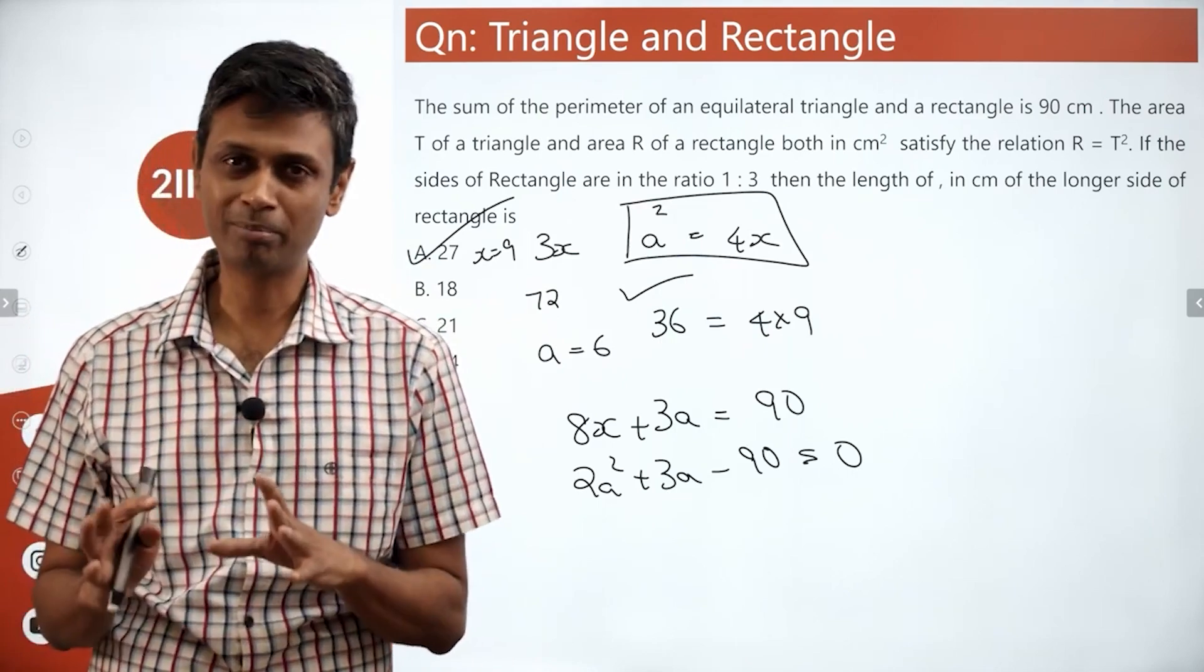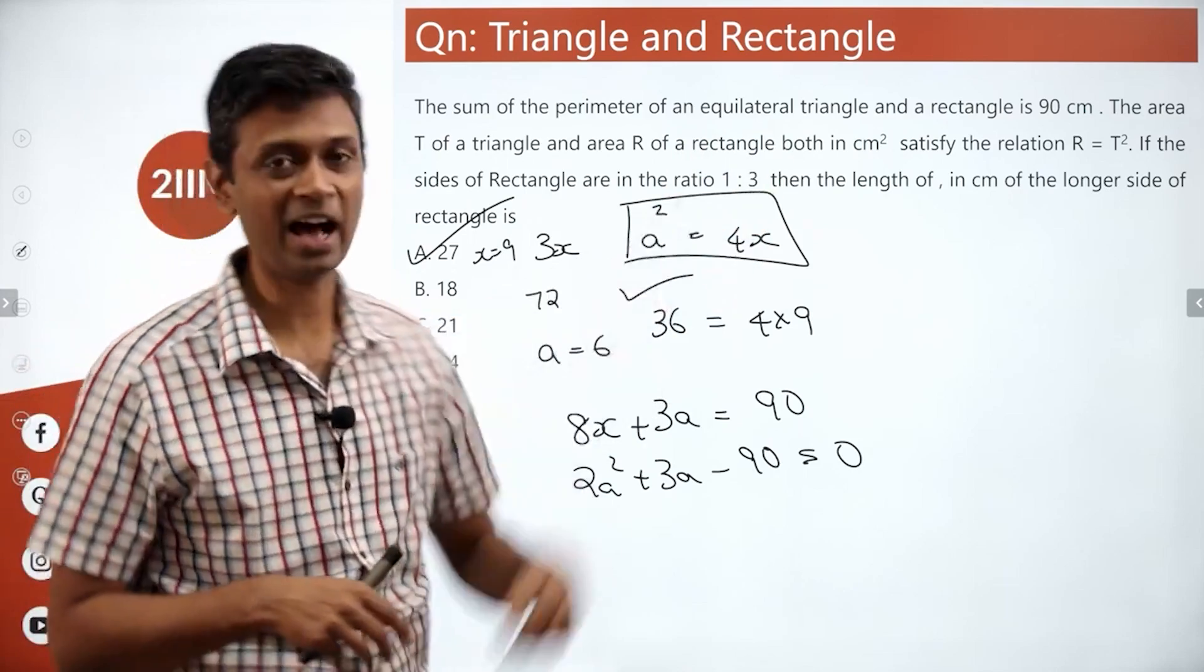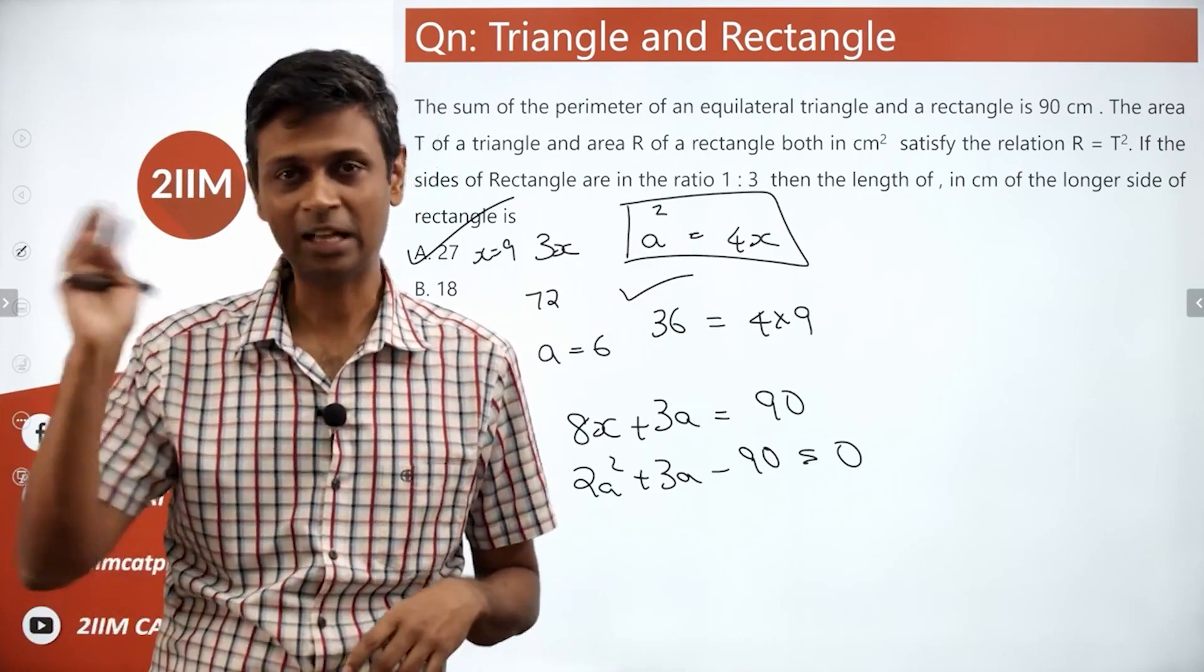We'll get some expression for A and then we can simplify and solve that. A routine question, mildly irritating. At least, I feel peeved by it because of that one expression R equal to T square. I find it an annoying way of describing a question. Otherwise, very doable.